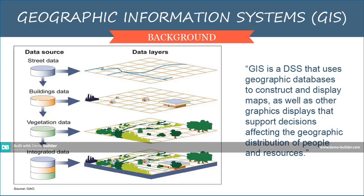Now we move on to Geographic Information System, or GIS. GIS is a decision support system that uses a geographic database. Many companies use GIS with Global Positioning System, or GPS, to help them choose new retail store locations, optimize distribution routes, or analyze demographics of their target audiences. Popular GIS softwares are MapInfo and Atlas GIS.